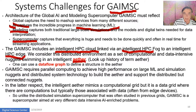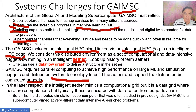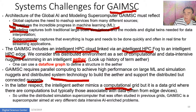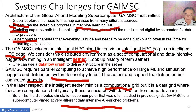We need parallel computing to achieve high performance on large machine learning and simulation. We need distributed system technology to build the ether and support the distributed and connected nuggets — the nuggets of particular machine learning codes. This whole concept is a data grid where computations are done on the edge to interpret images and tell the robot to stop before it collides. So it's a supercomputer aimed at data-intensive, AI-enriched problems.